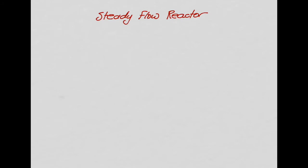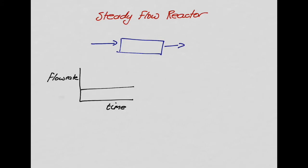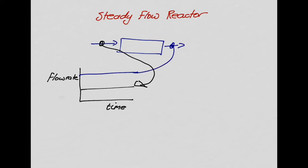Let us now consider what we mean by a steady flow reactor — a very important concept. Consider some reactor represented as a block. If we measure a property such as flow rate at a given point and plot changes with time, we find it stays constant. Measuring the flow rate at the exit, we might find it is also constant but at a different value.